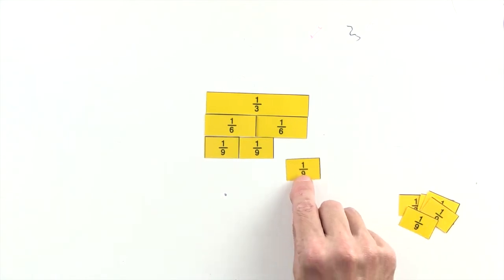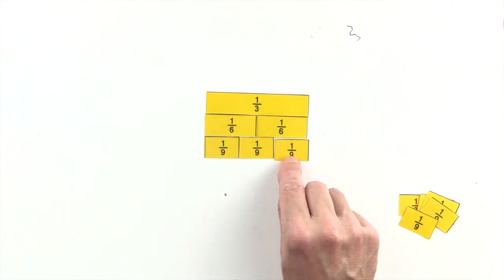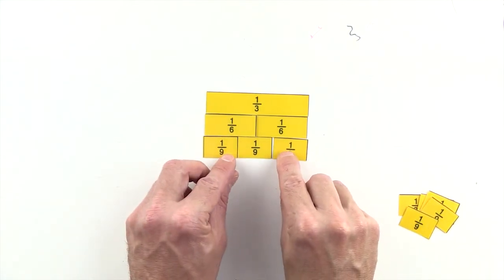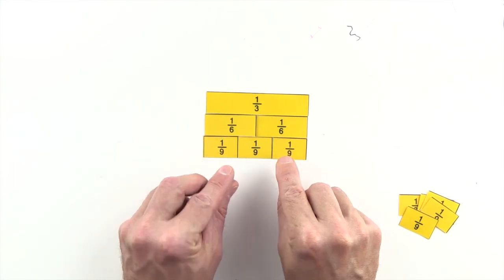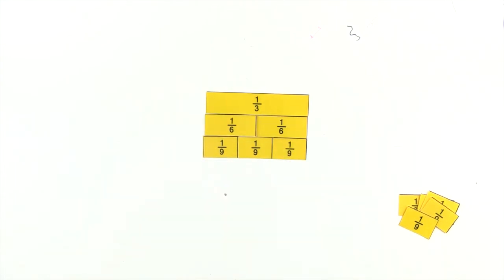3 ninths are equal to 1 third, so 3 ninths and 1 third are equivalent fractions.